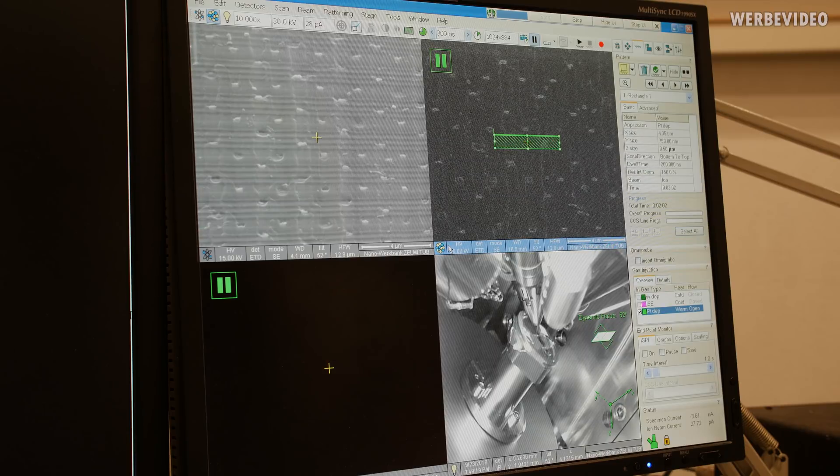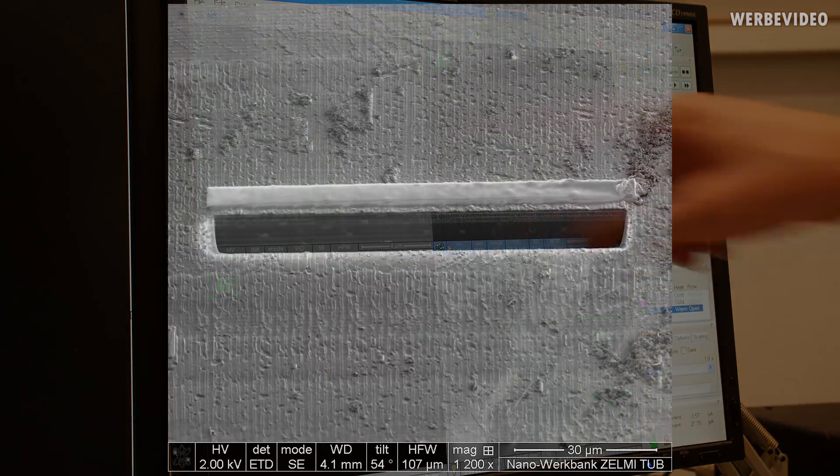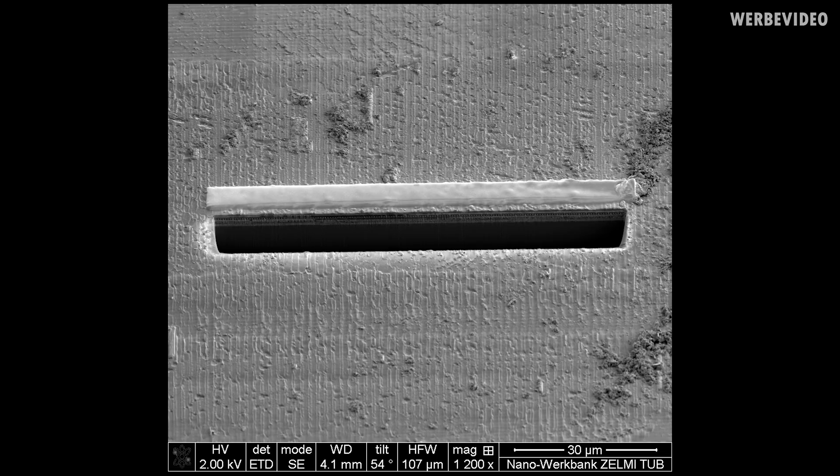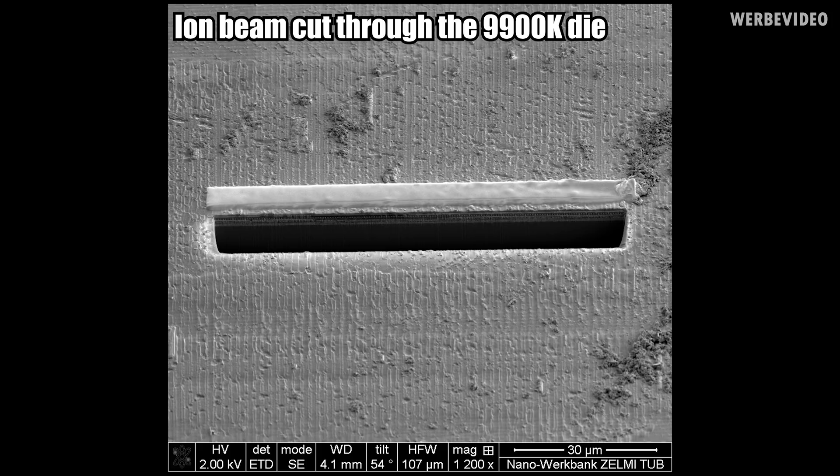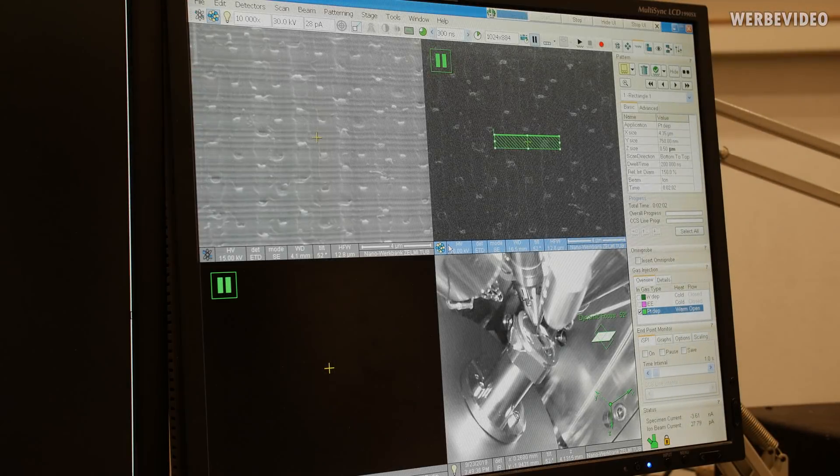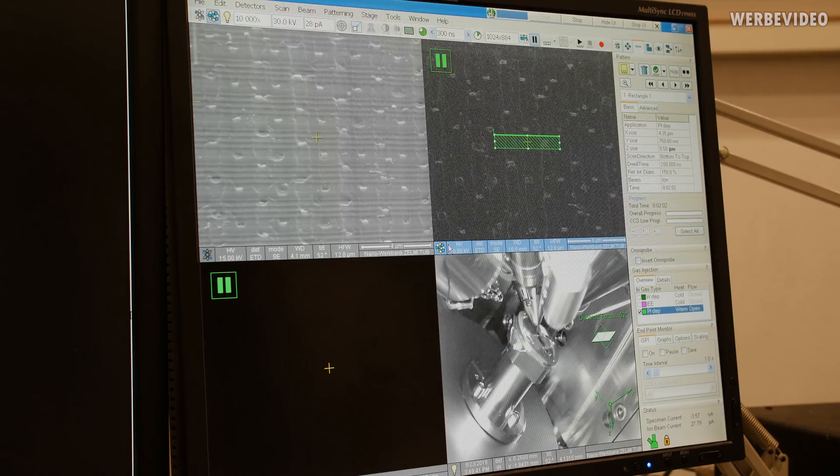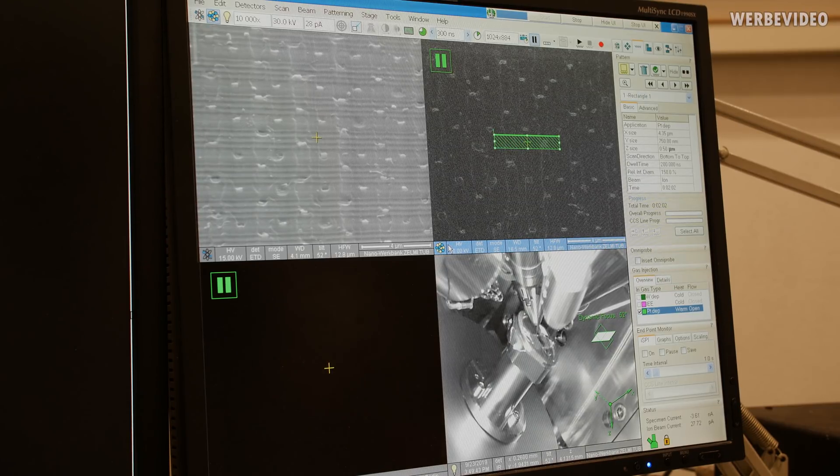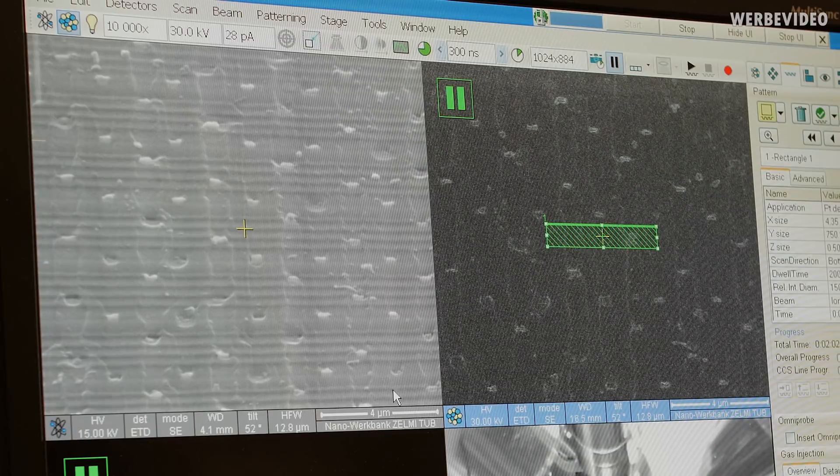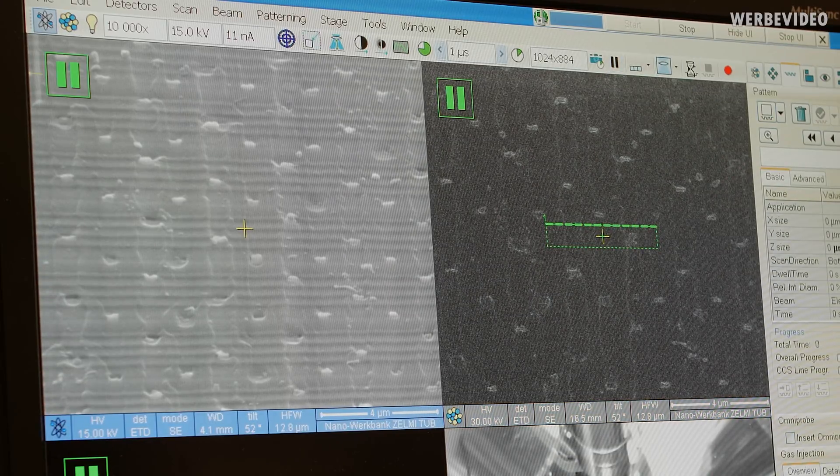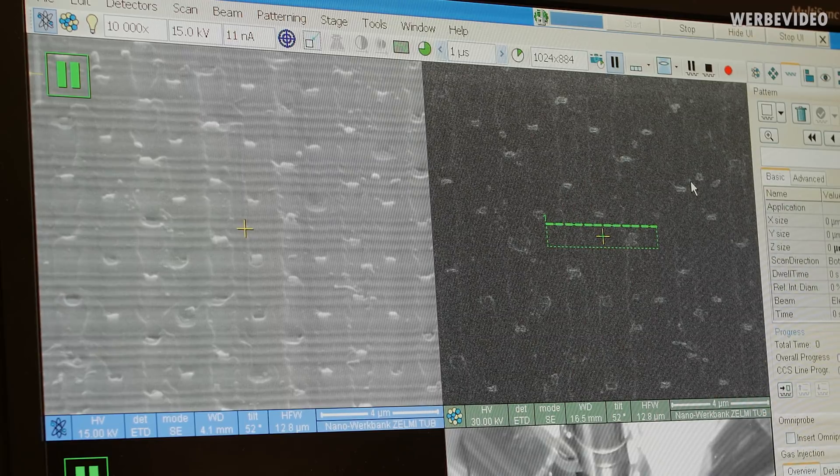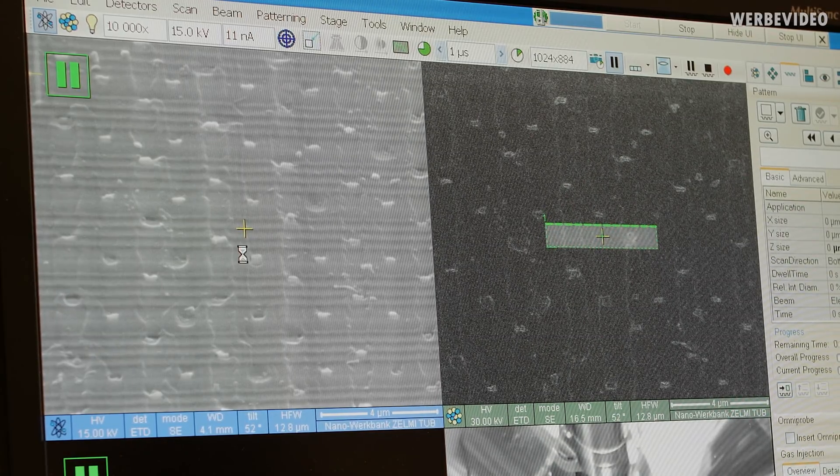And so I will now use the ion beam to remove material here. But unfortunately, the ion beam is not as well focused as it should be. And for this purpose, I'm going to deposit first some metal layer here. This will be a platinum deposition layer. And this will protect the surface of our specimen. And I just start here.